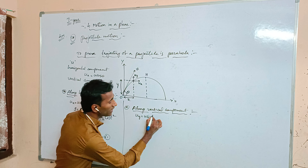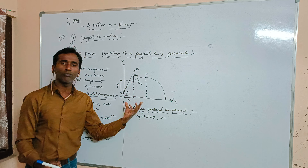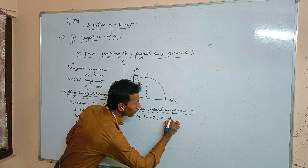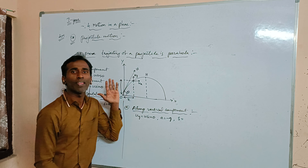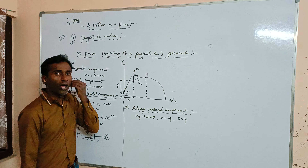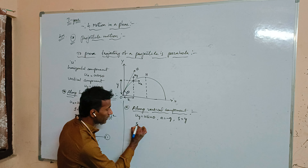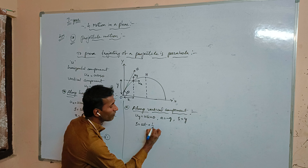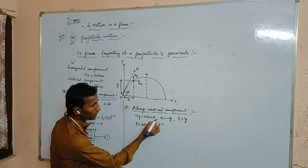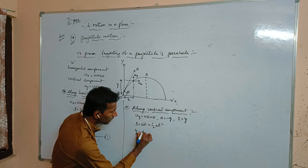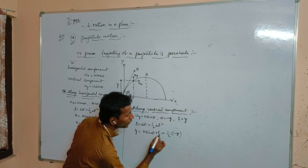Along the vertical component, uy = u sin theta, and the acceleration a = -g (since the body is moving upward), and the distance travelled is s = y. We substitute all these values into the kinematic third equation s = ut + ½at²: y = u sin theta · t + ½ · (-g) · t².